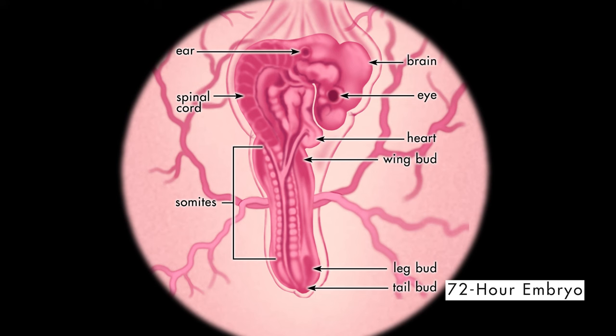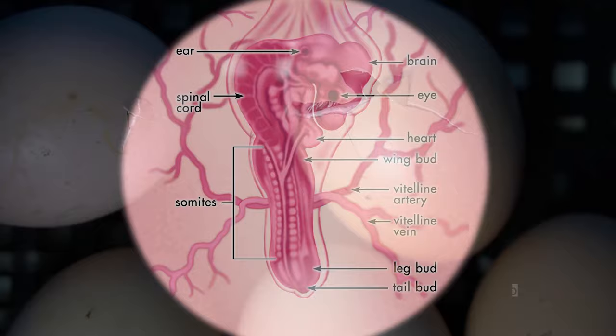And two sets of blood vessels, the vitelline veins and the vitelline arteries, have formed. The vitelline arteries draw nourishment from the yolk and pass it into the developing circulatory system. The vitelline veins carry waste from the embryo into the yolk.